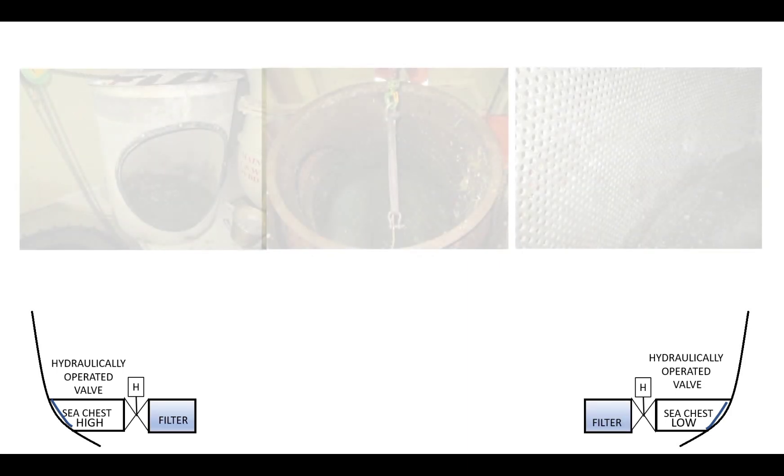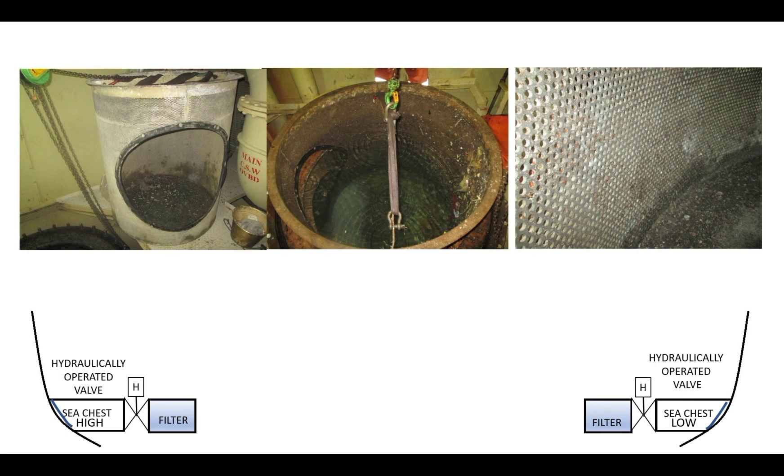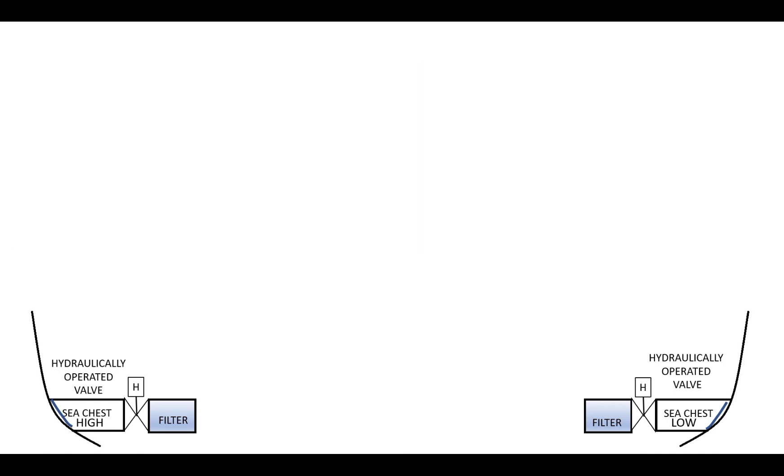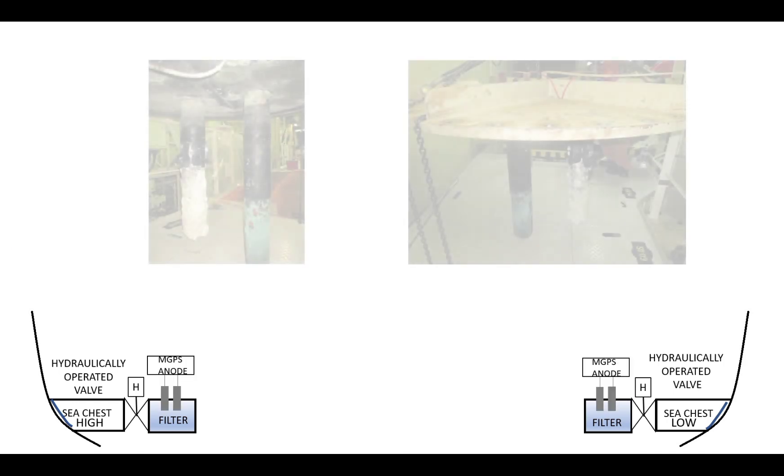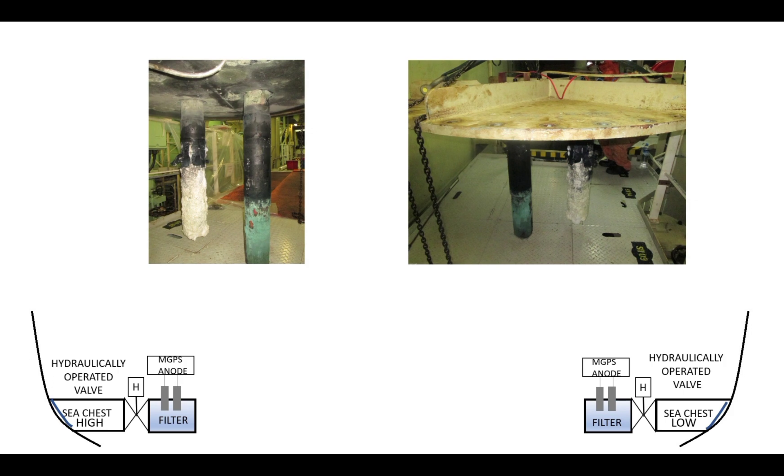Sea chest strainer is installed to trap solid impurities flowing into the system. On top of the strainer is an ICPS or marine growth prevention system, fitted with anodes to produce an anti-fouling and anti-corrosive layer over the internal sides of sea pipes. Current is also supplied to anodes to kill marine organisms.